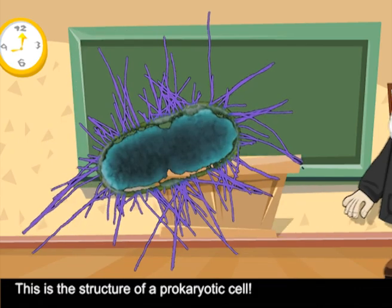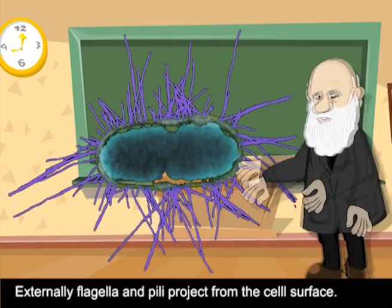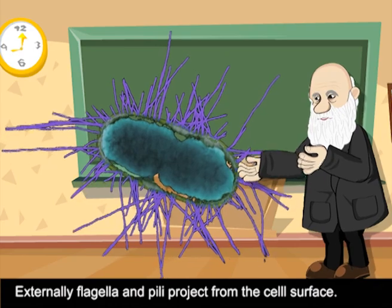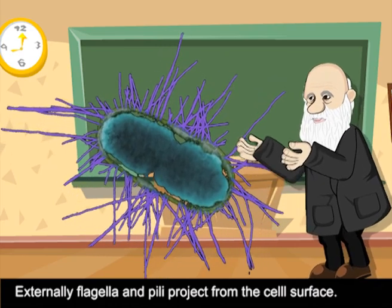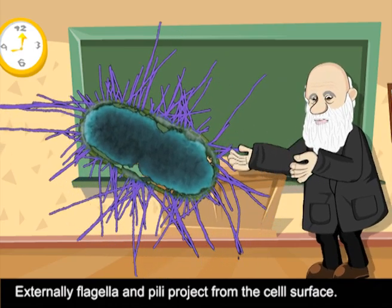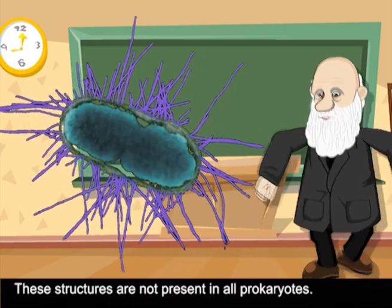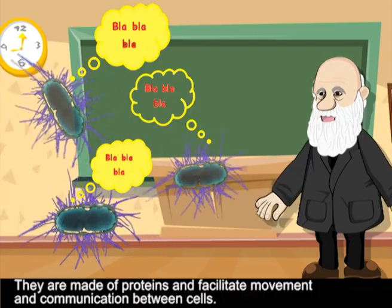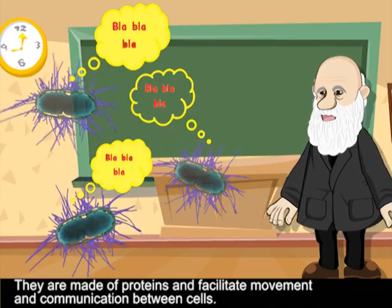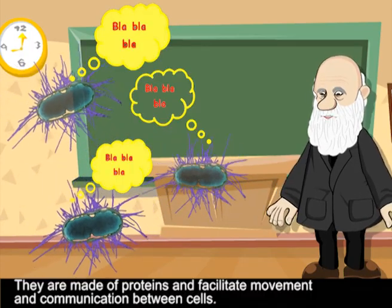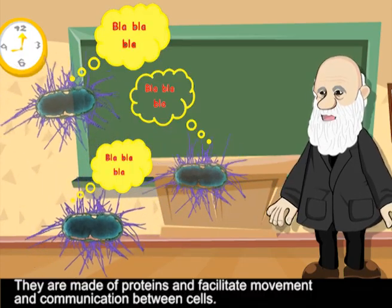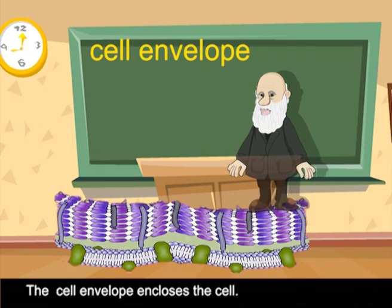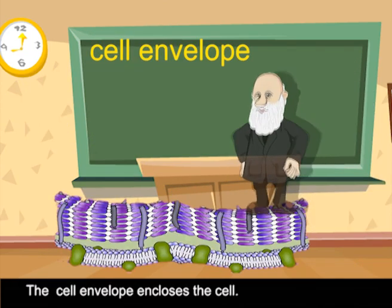This is the structure of a prokaryotic cell. Externally, flagella and pili project from the cell surface. These structures are not present in all prokaryotes. They are made of proteins and facilitate movement and communication between cells.